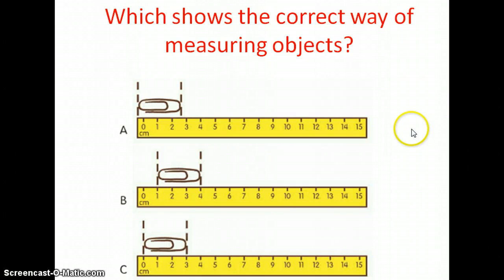Let's see if you understood what I just said. Here we have a question, which says, which shows the correct way of measuring objects? Well, we have A. We have a paper clip, and they started measuring it at the end of the ruler. Notice that. Here, on B, they started measuring it at one. And then at C, they started measuring it at zero. Which one of these is the correct way of measuring an object? Well, if you said C, you're correct. You should always start at zero.